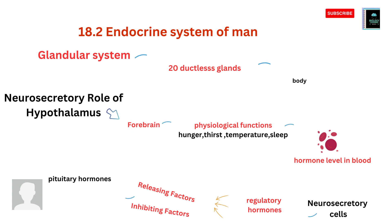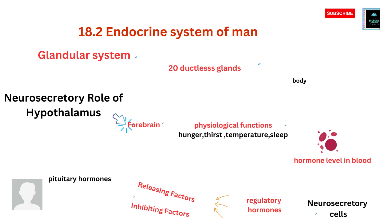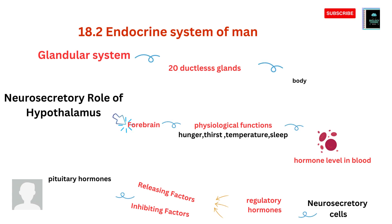Today we are going to start with the endocrine system of man. Our endocrine system acts as a messenger system in which there are feedback loops of hormones. Hormones are released from internal glands directly into our circulatory system. The human endocrine system is a collection of ductless glands that produce and secrete hormones. Hormones are chemical messengers that regulate biological processes such as metabolism, energy levels, reproduction, growth and development.